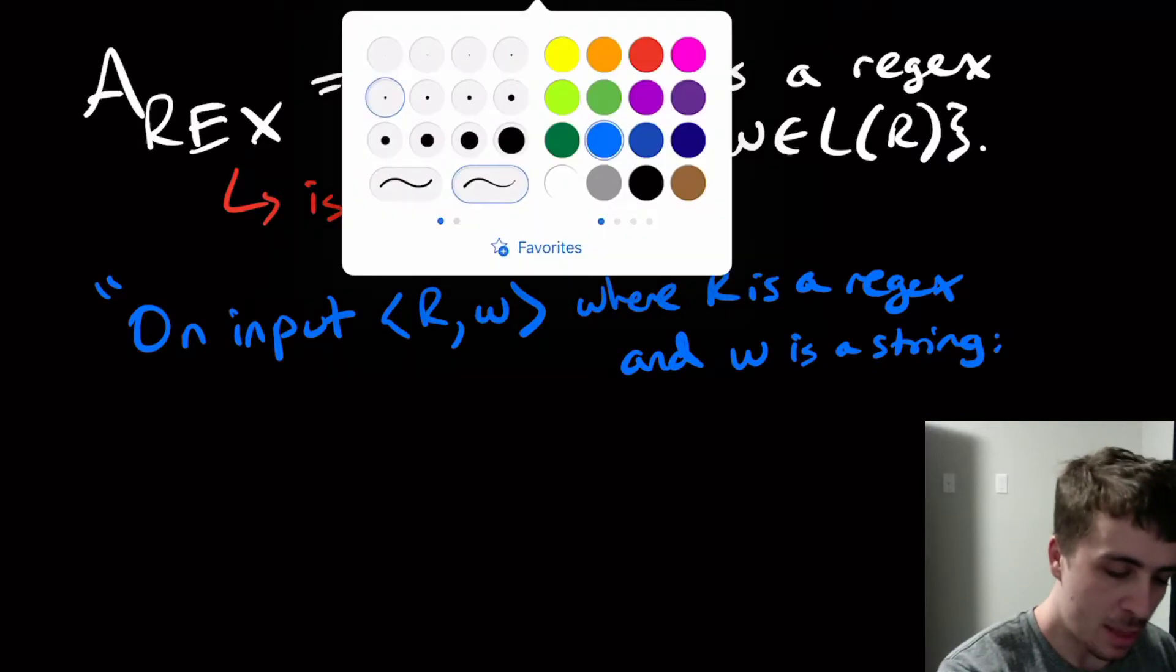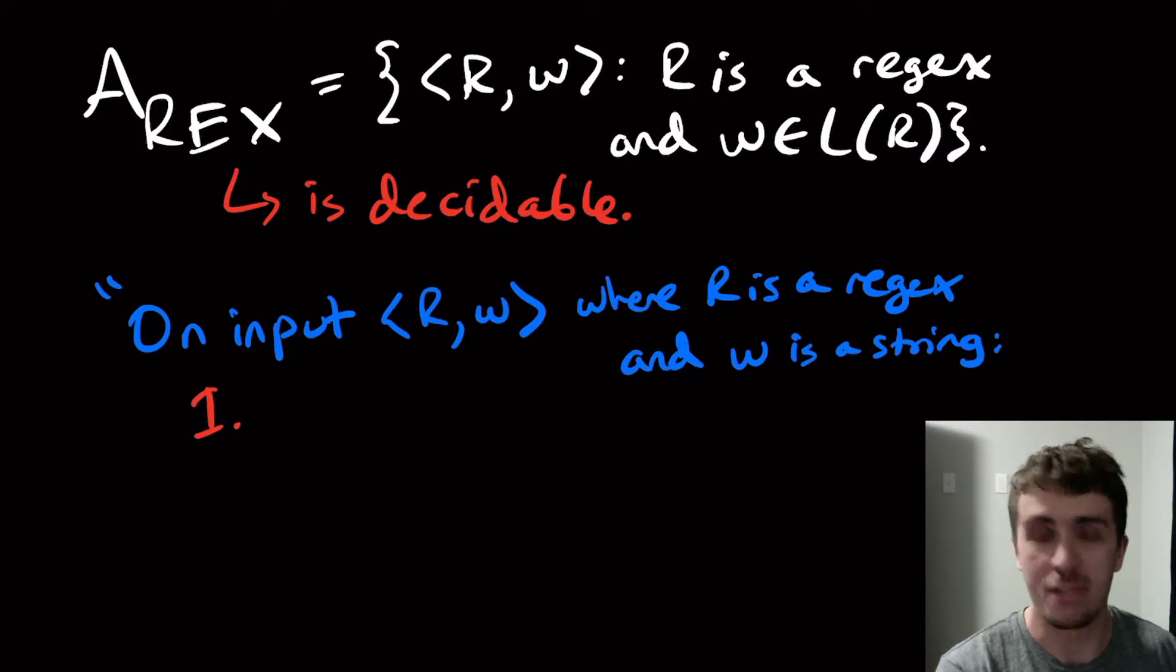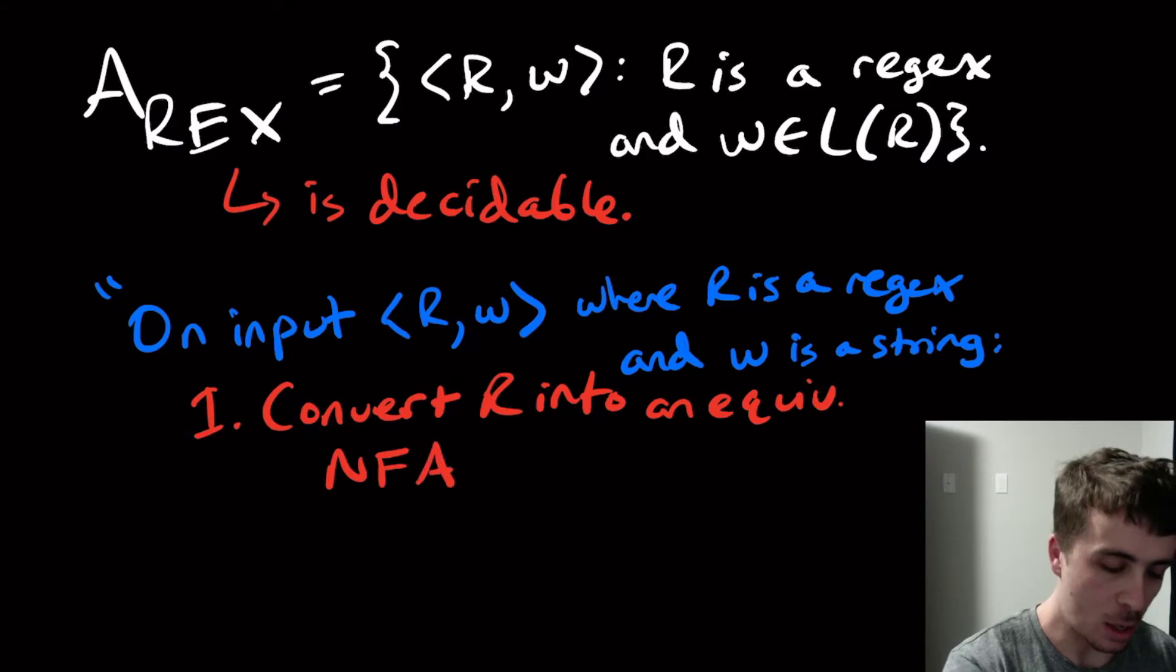But one thing that we can do is we can just, of course, convert this to an equivalent nfa. So let's convert r into an equivalent nfa. I'm going to call n.